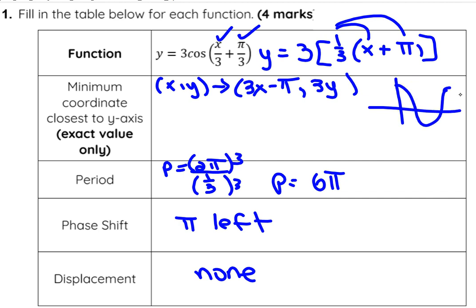So cosine looks like this. I have a minimum value on either side. Now I am stretching it and moving it to the left. So I'm going to go with this point right here, and that point is at π and negative 1.